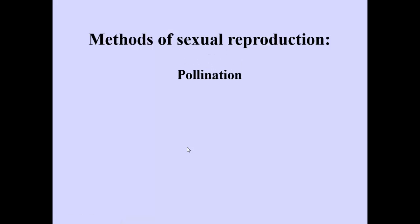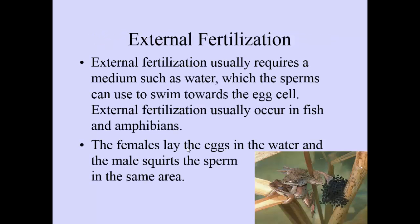Methods of sexual reproduction are: pollination, external fertilization, and internal fertilization. External fertilization usually requires a medium such as water, which sperm can use to swim towards the egg cell. It typically occurs in fish and amphibians — the females lay eggs in the water and the males squirt sperm in the same area. The egg and sperm get together and form a zygote. Here's a picture of external fertilization in action.